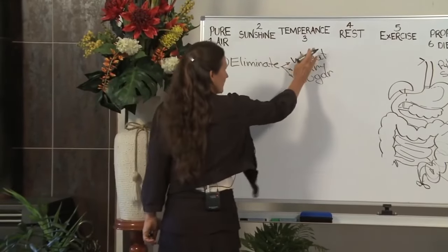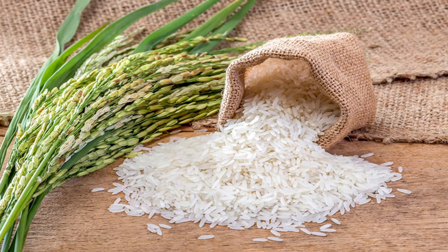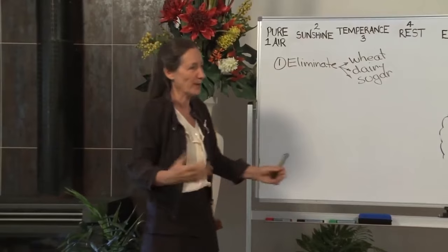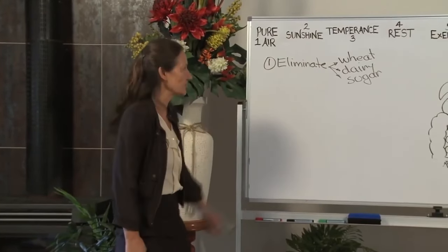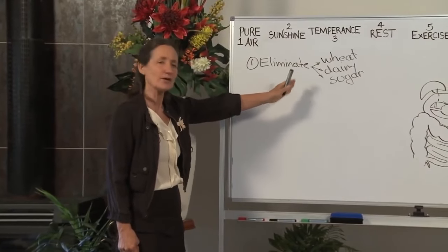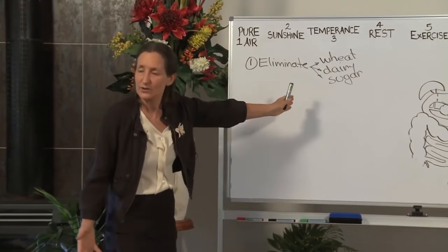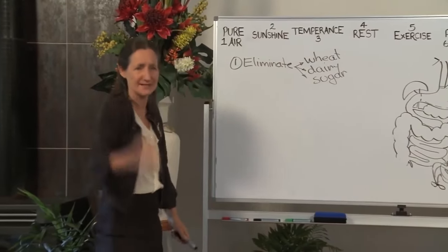There are so many other grains. You've got rice. You've got millet. You've got quinoa. You've got buckwheat, amaranth. There are so many grains. There's no need to have the wheat. Well, how can we not have dairy? People say, what milk do you drink, Barbara? I say, I'm weaned. I don't drink milk. Milk's for babies.